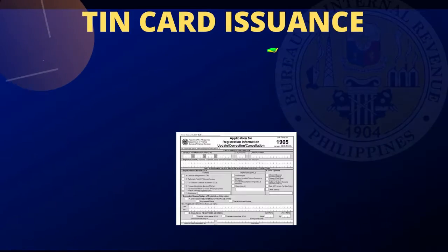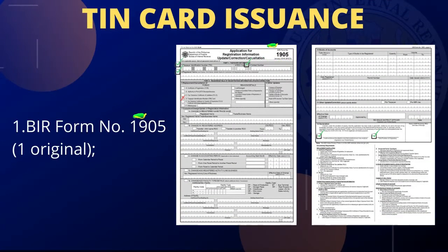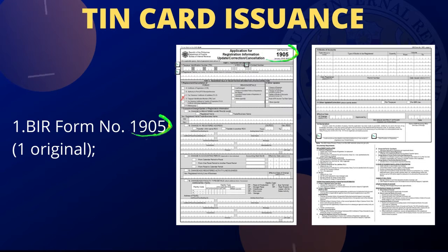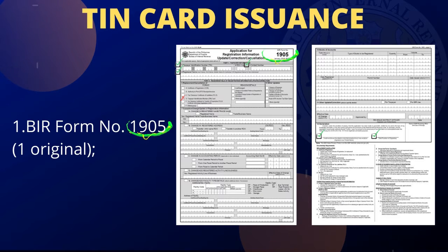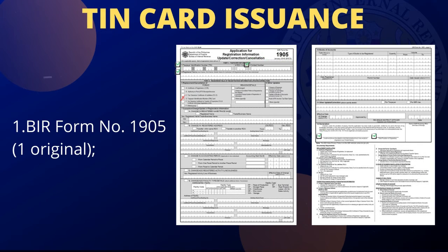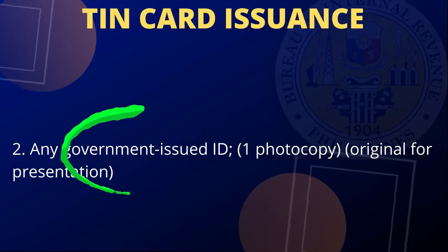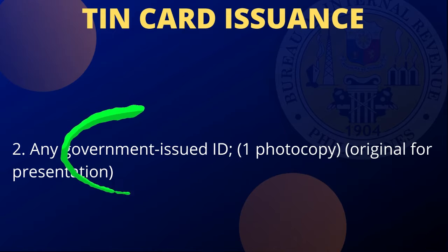PIN card issuance: one, BIR Form Number 1905, one original. The mandatory fields are the following: taxpayer identification number, contact number, registered name, replacement or cancellation of forms — TIN card, string signature over printed name on taxpayer or authorized representative, tax agent, title or position of signatory. Please note that initial issuance of TIN card is free of charge.